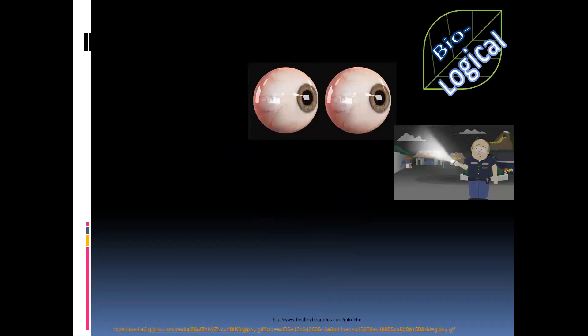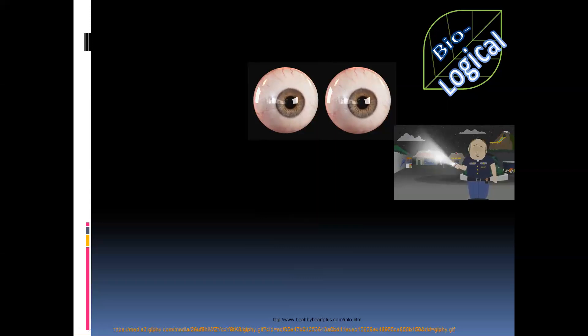When we learned about the structures and functions of the different parts of the eye, we mentioned that the iris can control the size of the pupil. When the eye looks in an environment where it is darker, the pupil will dilate, meaning increase in diameter. This allows for more light to enter the eye and makes vision possible in conditions of low light.